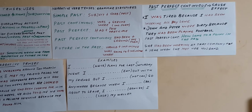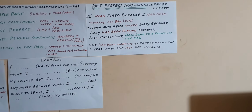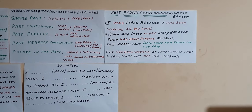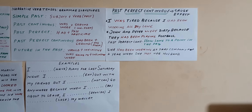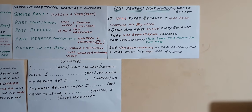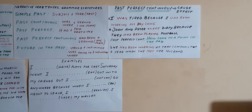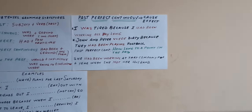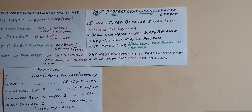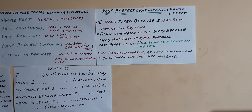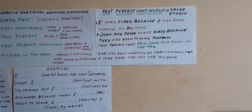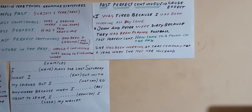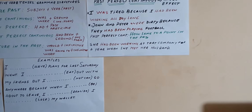These are the narrative tenses. Now let's deal with the past perfect continuous. Why am I going to focus on the past perfect continuous? Because maybe some of you did not study this tense. But it's very simple. One of the main uses of the past perfect continuous is to express a cause-effect relation in the past. For example: 'I was tired.' Why were you tired? Because I had been working all day long.